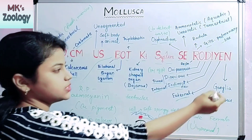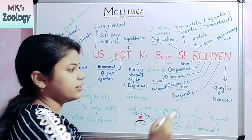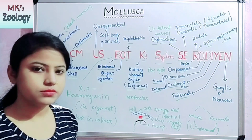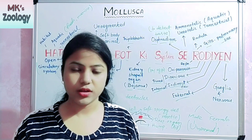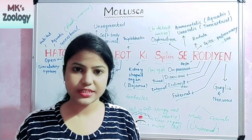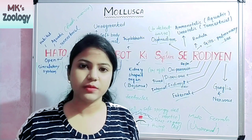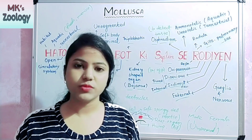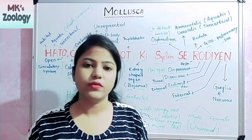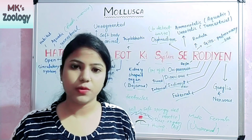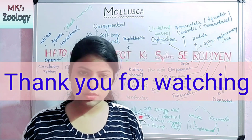The next is the nervous system — ganglia and nerves are present in the molluscan body. This is all about Phylum Mollusca. I hope you are clear with the content. If you like this video, hit the like button and subscribe to my channel for further videos. In the next video tutorial I will discuss some important topics of zoology. Thank you for watching.